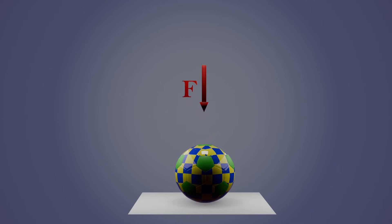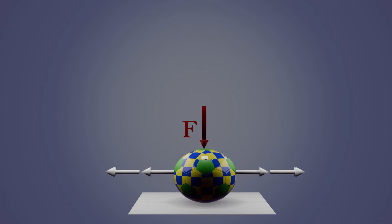The ball compresses in the direction of the force, but at the same time, it expands sideways. This sideways expansion is exactly what Poisson's ratio helps us understand.